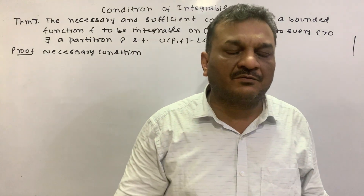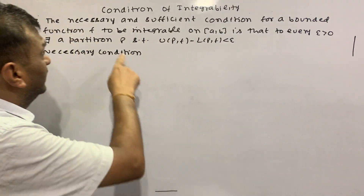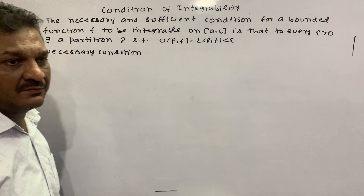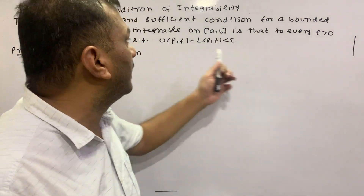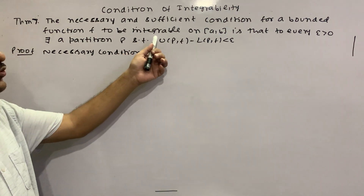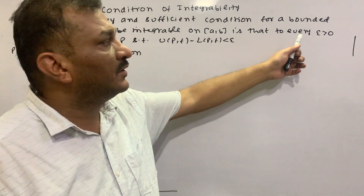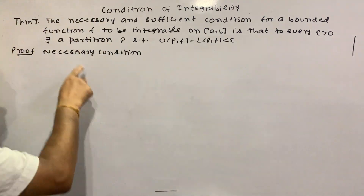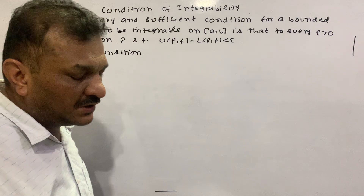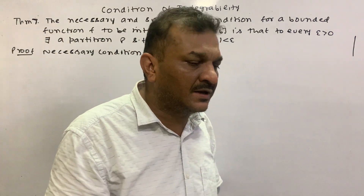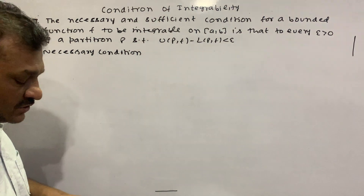Hello students, today we will start Condition of Integrability number seven. The necessary and sufficient condition for a bounded function f to be integrable on closed interval [a, b] is that to every epsilon greater than zero, there exists a partition P such that UPf minus LPf is less than epsilon.